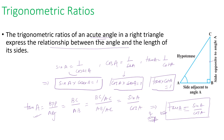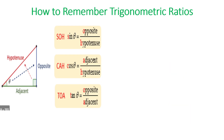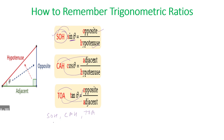Now how can we remember these ratios? The first ratio is sine theta, which is opposite upon hypotenuse — this can be remembered as SOH: S stands for sine, O for opposite, H for hypotenuse. Next is CAH: C for cosine, A for adjacent, H for hypotenuse. Then TOA: T for tan, O for opposite, A for adjacent. So the mnemonic is SOH-CAH-TOA.